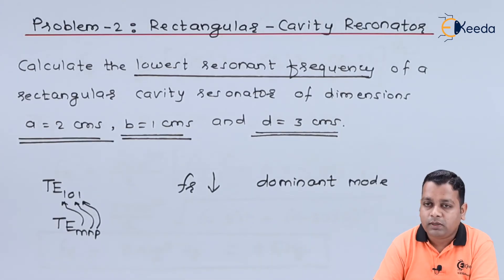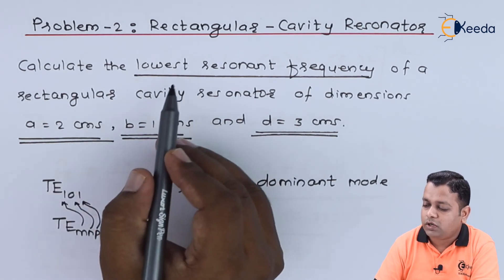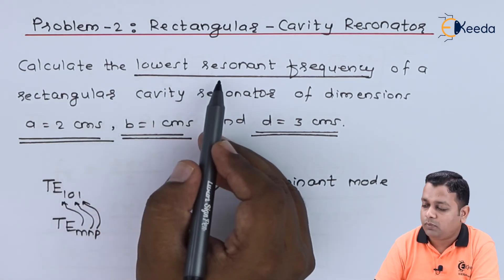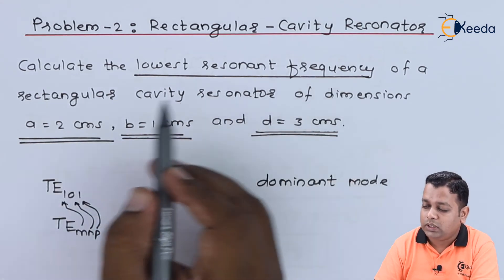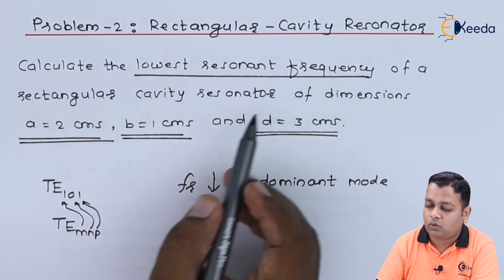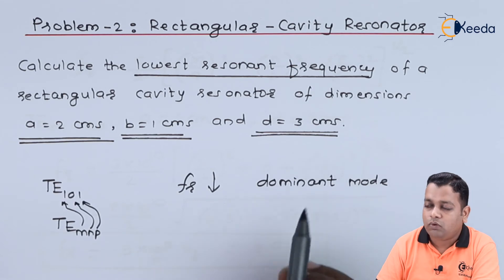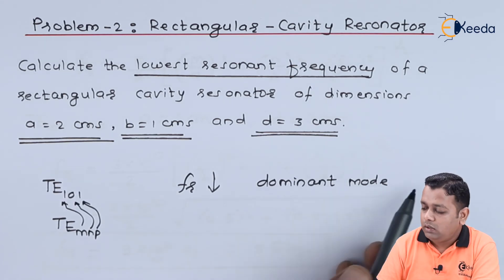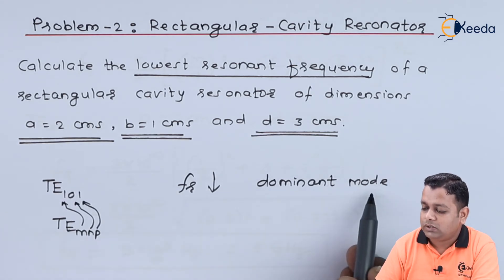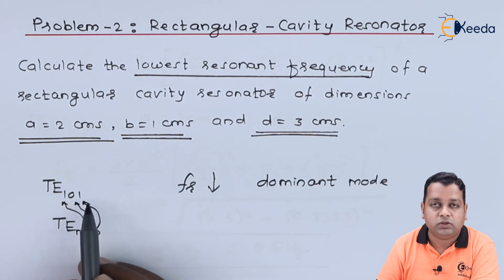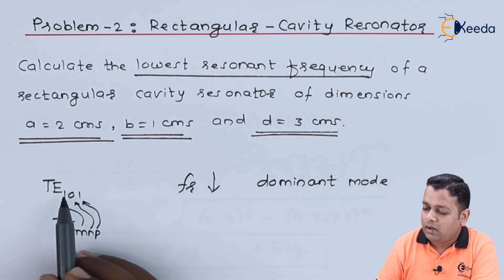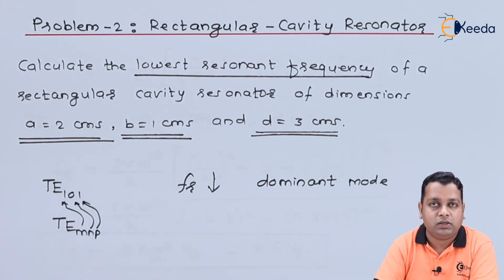This was our problem statement. We were asked to determine the lowest possible value of resonant frequency for the given rectangular cavity resonator of dimensions a, b, d, and the mode of propagation for the dominant case TE 101. We determined the value.